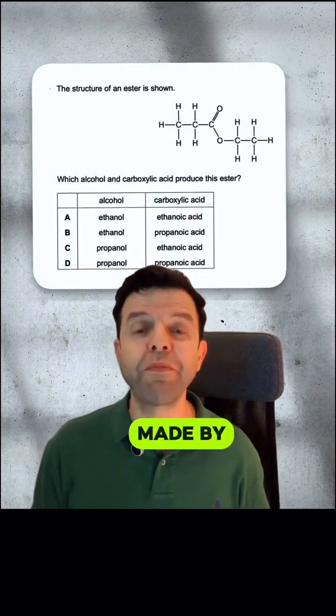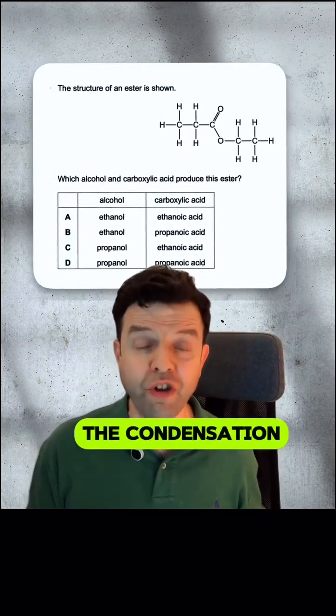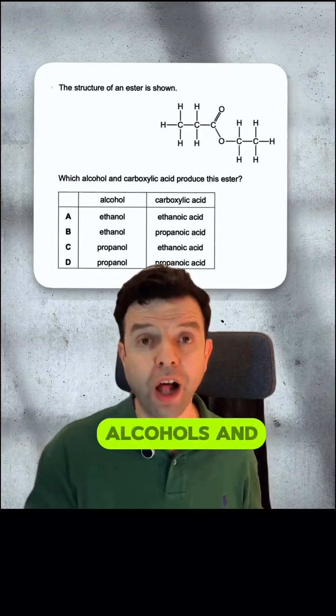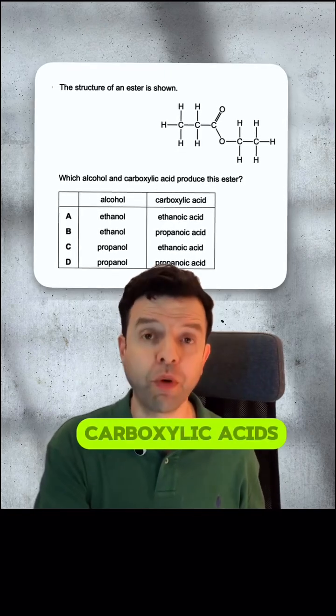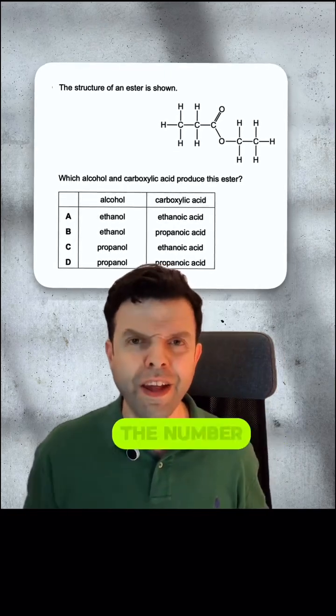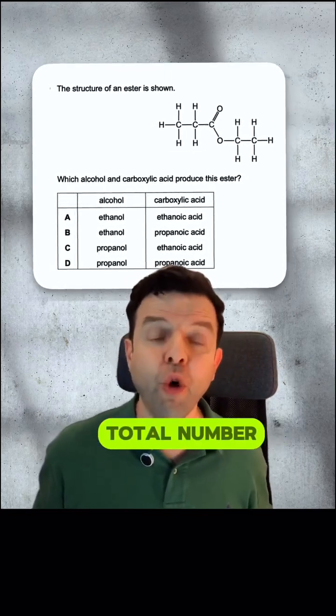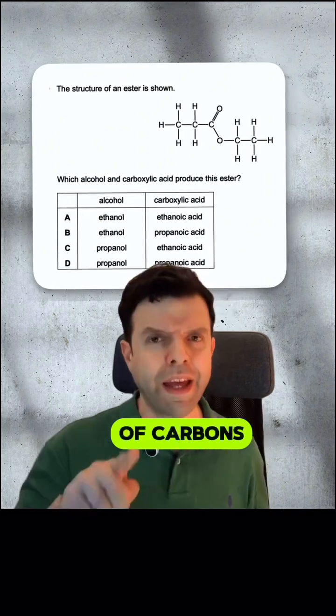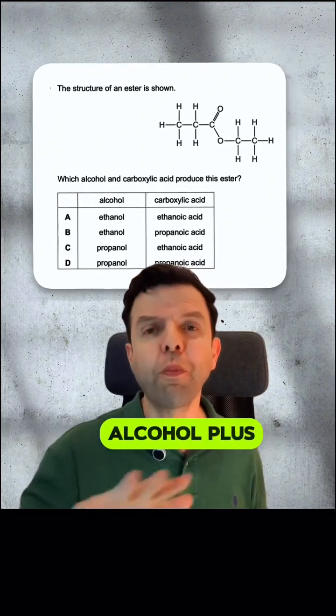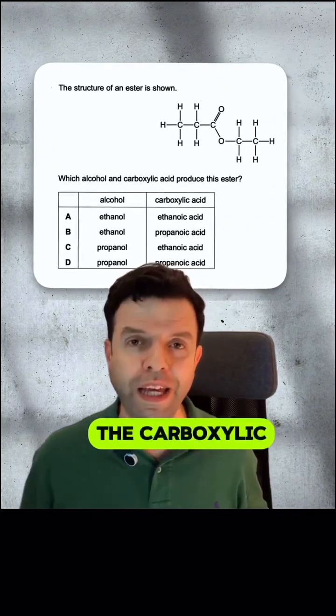Esters are made by the condensation reaction of alcohols and carboxylic acids. The number of carbons in an ester is the total number of carbons in the alcohol plus the carboxylic acid.